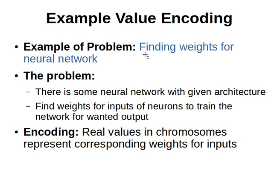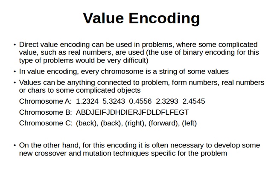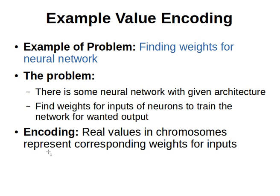An example of this encoding type in genetic algorithms is finding weights for a neural network. We have a neural network with a certain architecture, and we are trying to find weights for the inputs of neurons to train the network for some desired output. We want to automatically find those weights, and we use value encoding to do so.